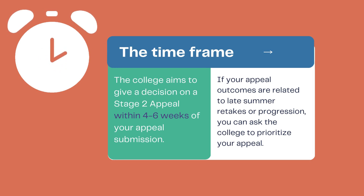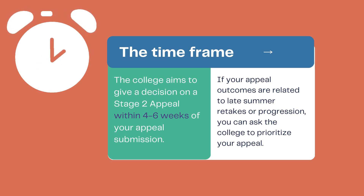If your appeal outcomes are time sensitive — for example, relating to late summer retakes or progression issues — you can ask the college to prioritise your appeal when you fill out the appeal form.